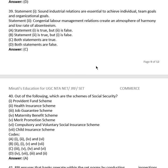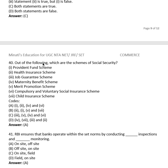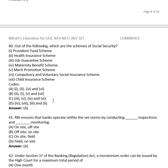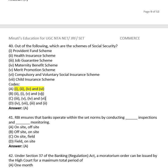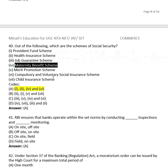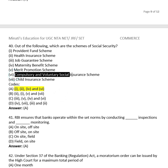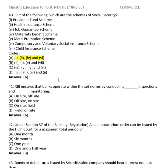Question 38: Which of the following are schemes of social security? The right answer is option (A) — items 1, 2, 4, and 6. These are: (1) Provident Fund Scheme, (2) Health Insurance Scheme, (4) Maternity Benefit Scheme, and (6) Compulsory and Voluntary Social Insurance Scheme. Job guarantee scheme, merit promotion scheme, and child insurance scheme are not included.